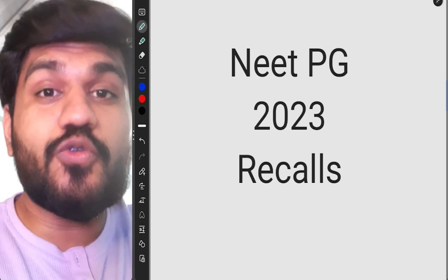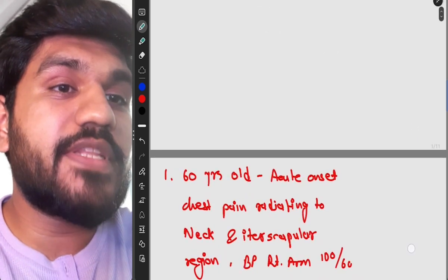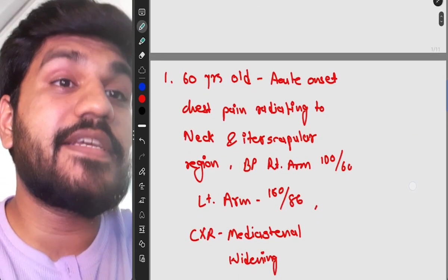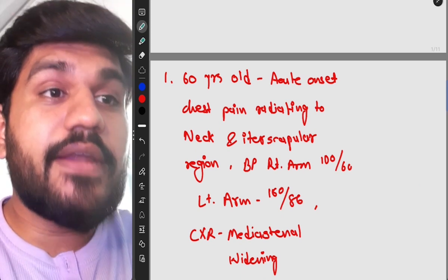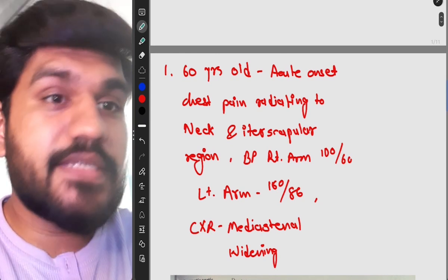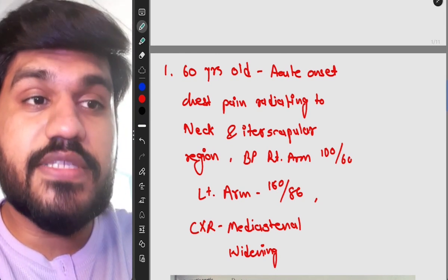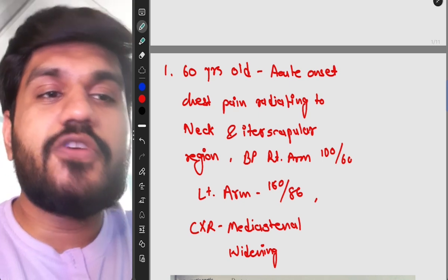We are going to start with our first question. That is 60 year old male, acute onset chest pain radiating to neck and interscapular region, BP right arm is 100 by 60 and left arm is 160 by 80, and CXR chest x-ray is showing mediastinal widening.